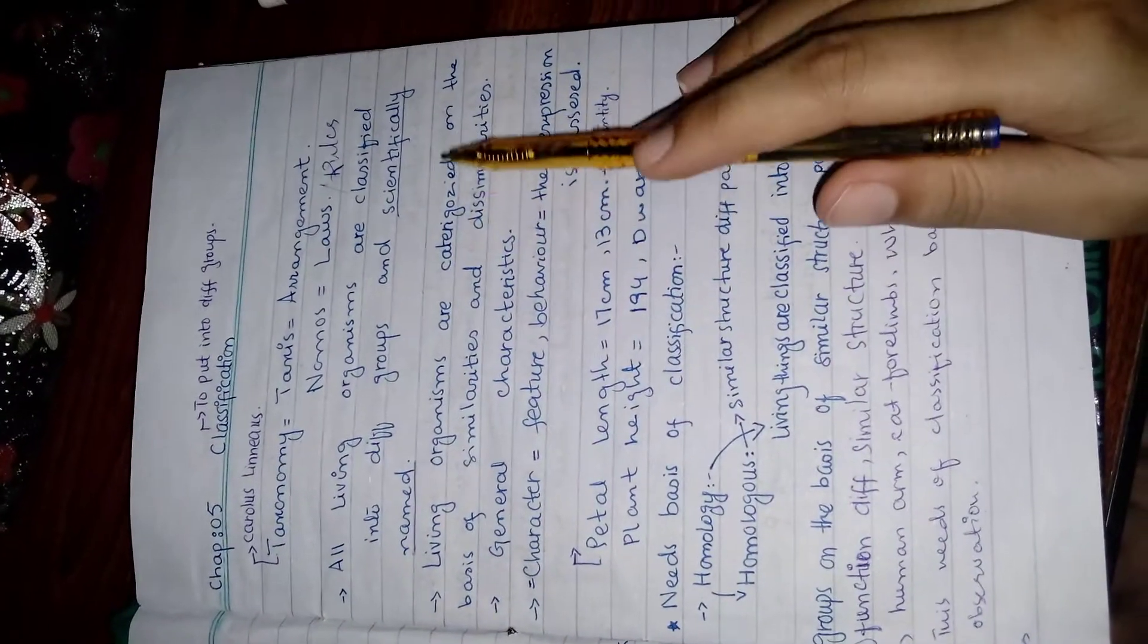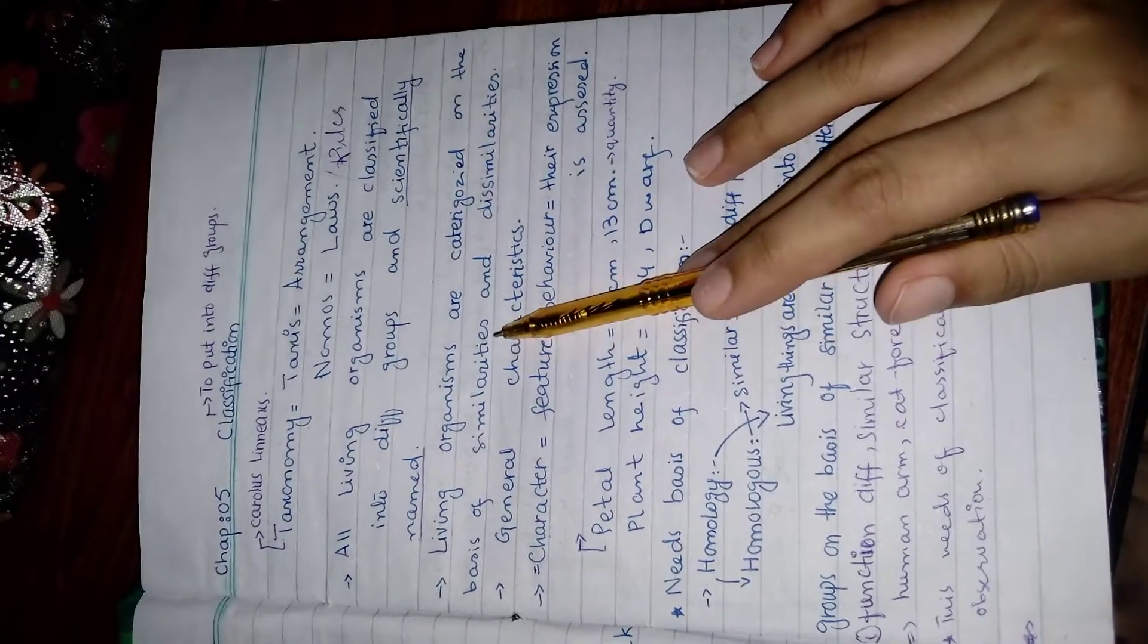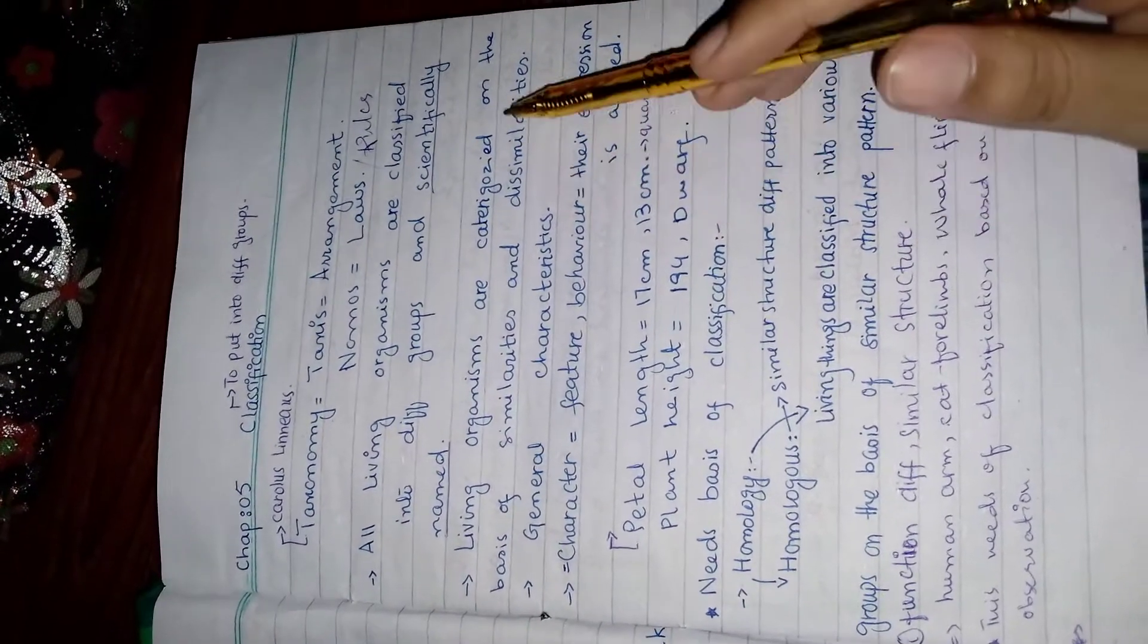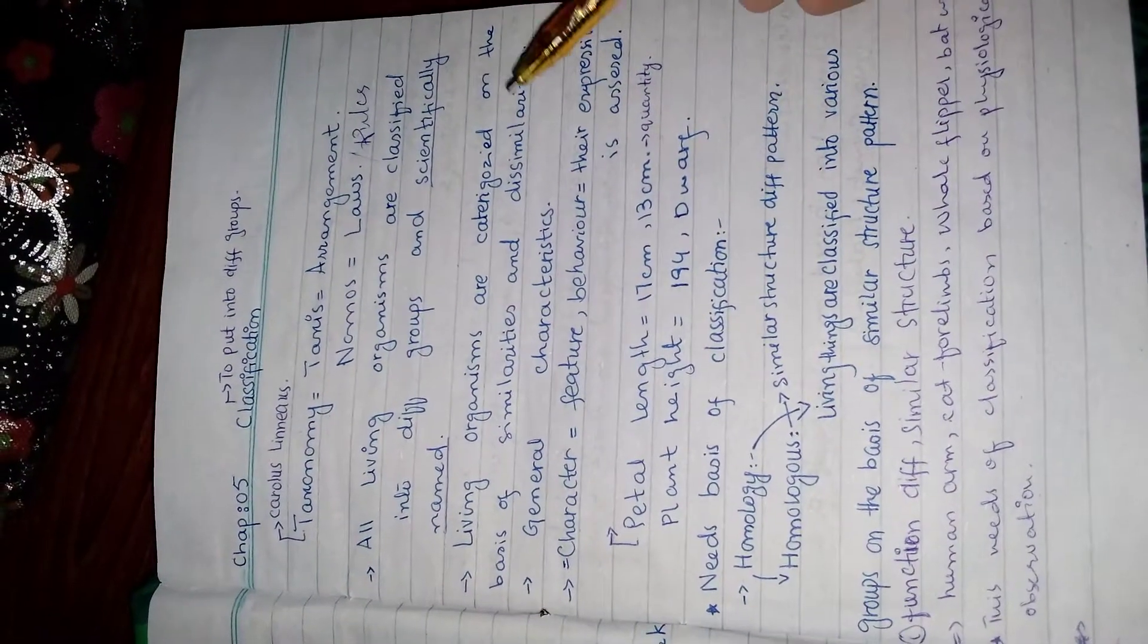Living organisms are categorized on the basis of similarities and dissimilarities. Here we are talking about the similarities and dissimilarities of species.